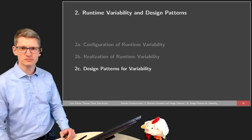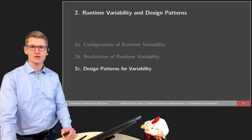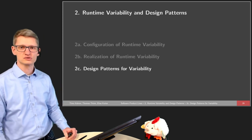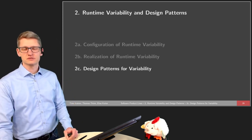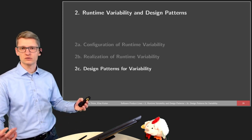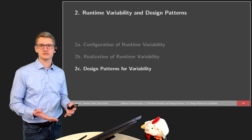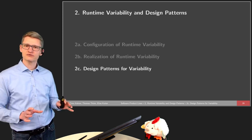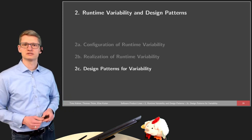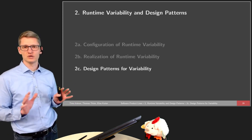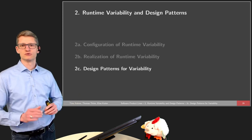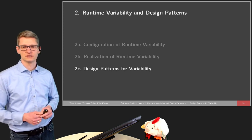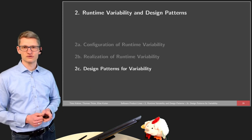Welcome to the third part of the lecture. In this part we will talk about design patterns with a particular focus on software variability. The idea is to show you how design patterns can actually help us realize software variability at source code level. We will look especially at object-oriented design patterns, connected not only to runtime variability but also to any other variability technique. We will first focus on previous examples for runtime variability, and also come back later in other lectures.